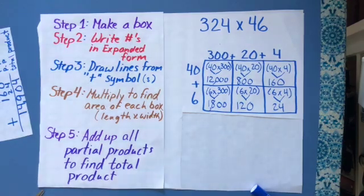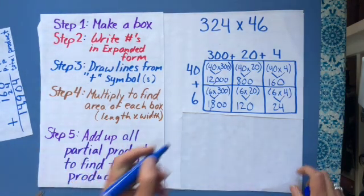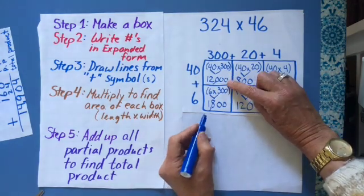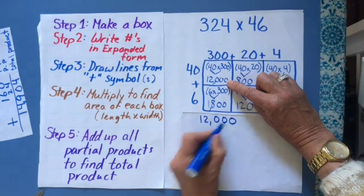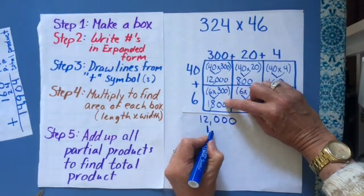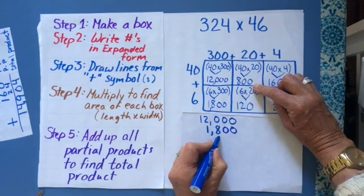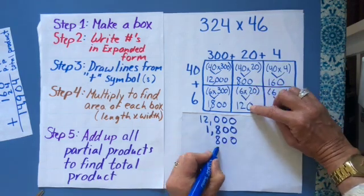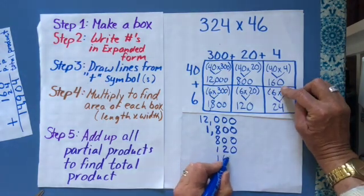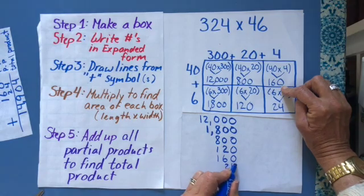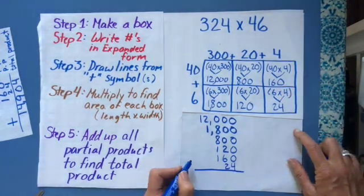So now I want to do step five, which is to add up all the partial products to find the total product. So I have 12,000. Then I'm going to write 1,800, 800, 120, 160, and 24. Now I need to add those up. So I'm just going to add all those up.